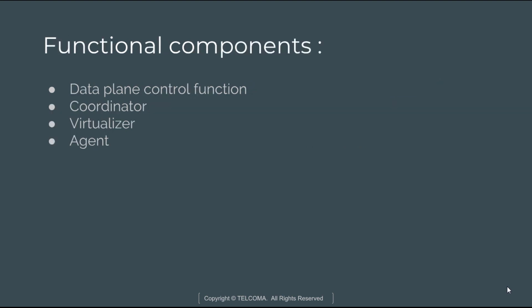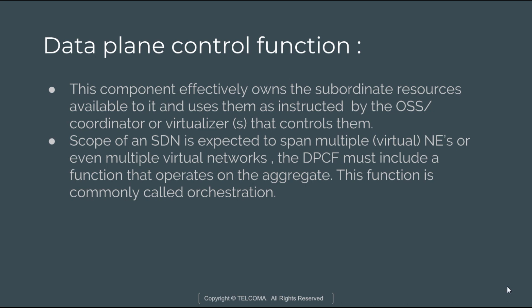The functional components of an SDN controller are: Data Plane Control Function (DPCF), coordinator, virtualizer, and agents. The SDN controller is a black box subject to a logical centralization requirement and includes additional functions as well. The first component is the Data Plane Control Function, which effectively owns the subordinate resources available to it and uses them as instructed by OSS, coordinator, or virtualizers that control them. These resources take the form of an information model instance accessed through the agent at the subordinate level.